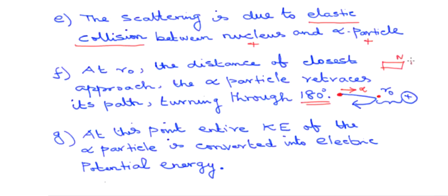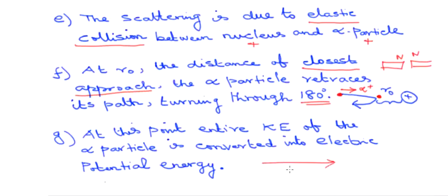Just like two north poles of magnets repel and cannot touch, the alpha particle (positive) and the nucleus (positive) repel each other and maintain some minimum distance. That distance is called the distance of closest approach. At this point, the entire kinetic energy of the alpha particle is converted into electric potential energy; the particle is stopped by the nucleus and then goes back.